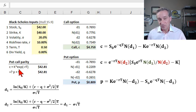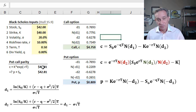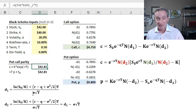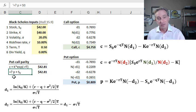On the one hand, the left-hand side of the equation, we have what I call call plus discounted cash. Discounted cash is the strike price discounted continuously at the risk-free rate over the term. Notice in this set of assumptions, it's a six-month option. I'm getting $42.81 for my call plus discounted cash.